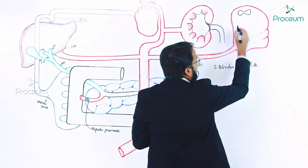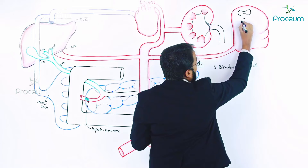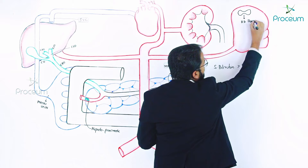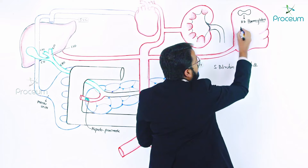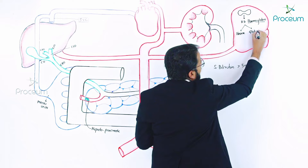When the RBC is broken down, within it is hemoglobin. Hemoglobin has two parts: one is called heme and the other is called globin. So hemoglobin breaks down into heme and globin.